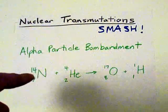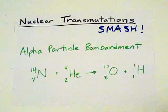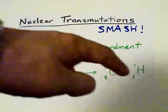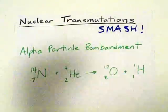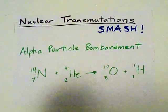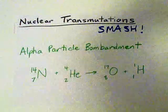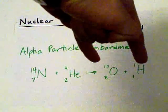In this case, when you bombard nitrogen-14 with an alpha particle, you end up with an oxygen-17, and a hydrogen-1, or just regular hydrogen. What you'll notice is that the mass on the left, 18, is the same as the mass on the right, 18.